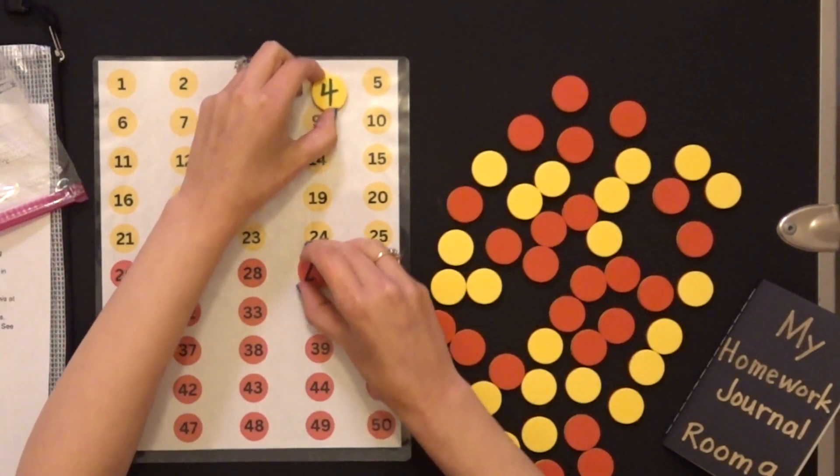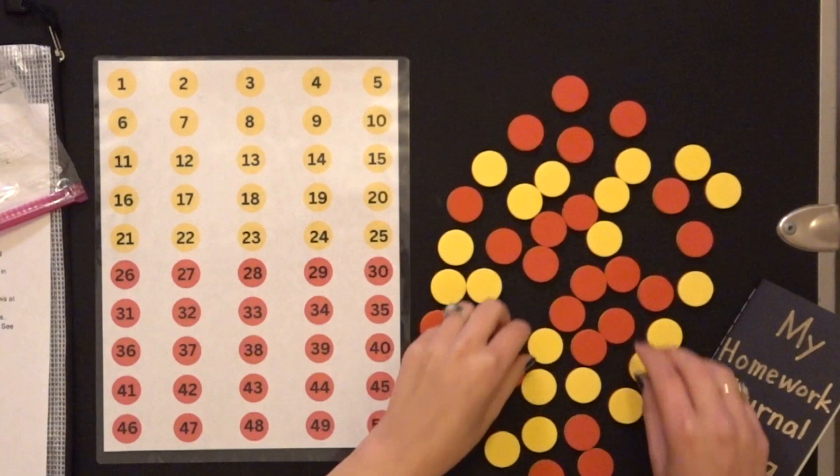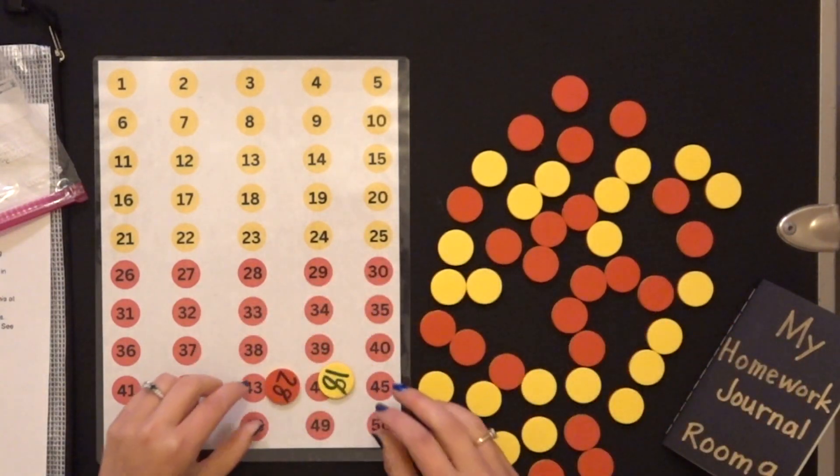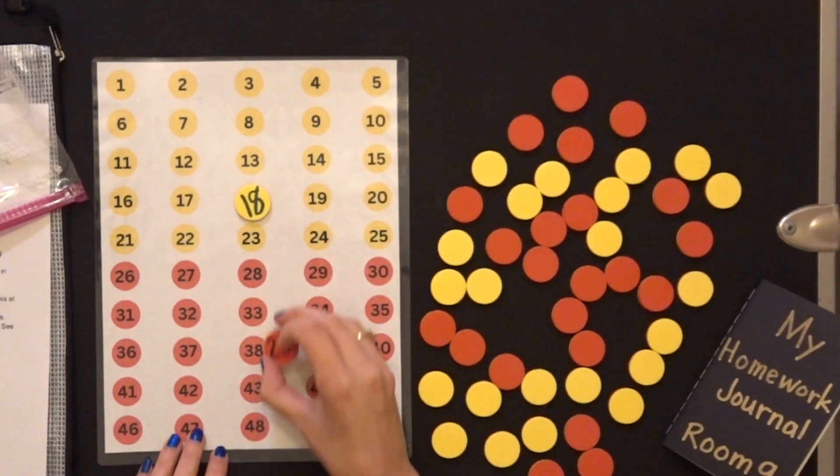So I'm going to take this number pair and put it over here. And I'm going to do the same thing. I'm going to choose two more. And I'm going to see, oh, I have 18 this time, and 28.